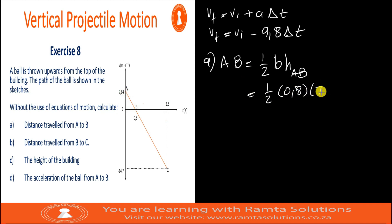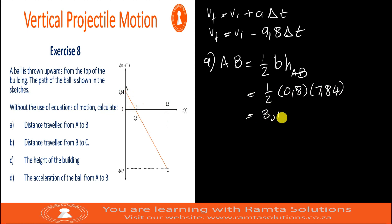What is the height? It's 7.84. So our calculation is half times 0.8 times 7.84, which gives 0.4 times 7.84. We have 3.14 meters. That's the distance travelled from A to B.